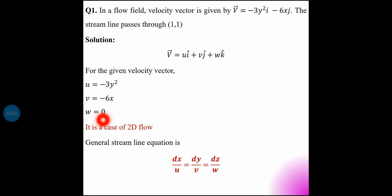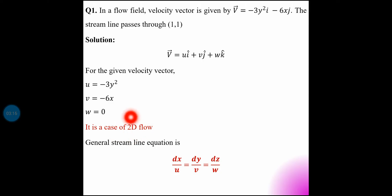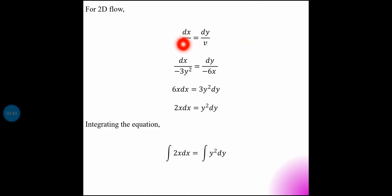Since w is equal to 0, this is a two-dimensional flow. The z-component is nil for two-dimensional flow. Using the streamline general equation dx/u = dy/v = dz/w, for the 2D case we drop the dz/w term. The 2D streamline equation becomes dx/u = dy/v.